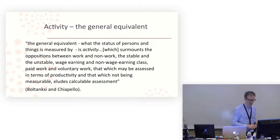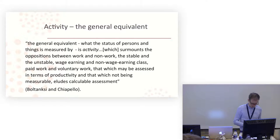But I'm going to focus on, draw on this quotation from the sociologists Boltanski and Chiapello. And they suggest that activity has become what they call the general equivalent. So activity is the general equivalent. It's what the status of persons and things is measured by. It surmounts the oppositions between work and non-work, the stable and the unstable, wage earning and non-wage earning class, paid work and voluntary work, that which may be assessed in terms of productivity and that which not being measurable eludes calculable assessment.